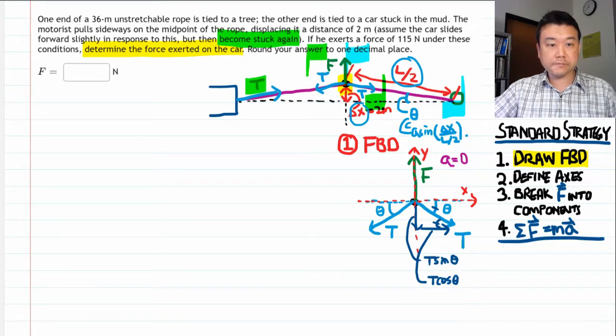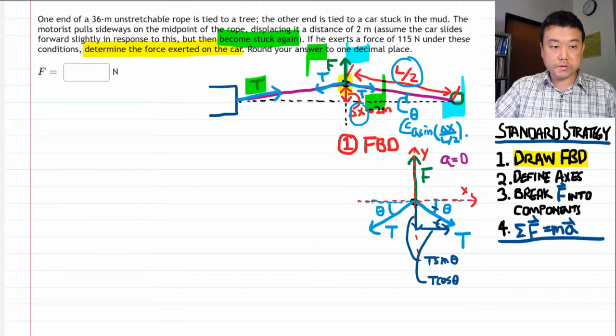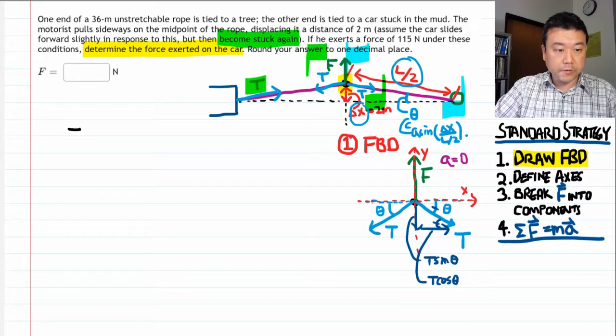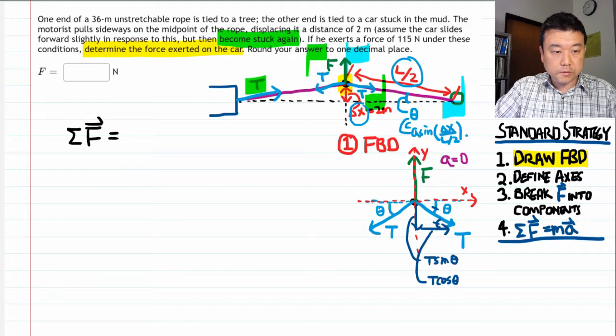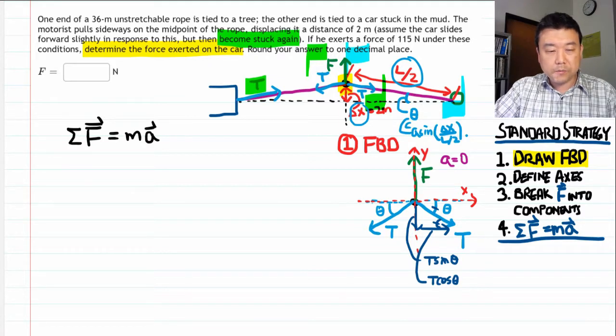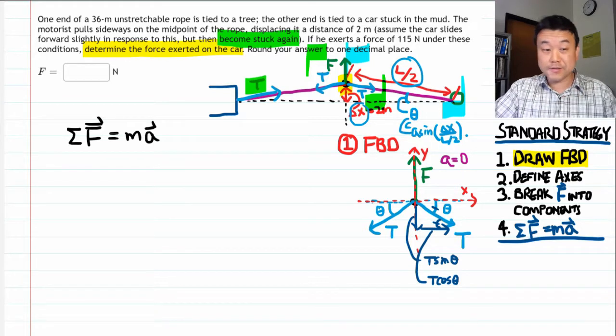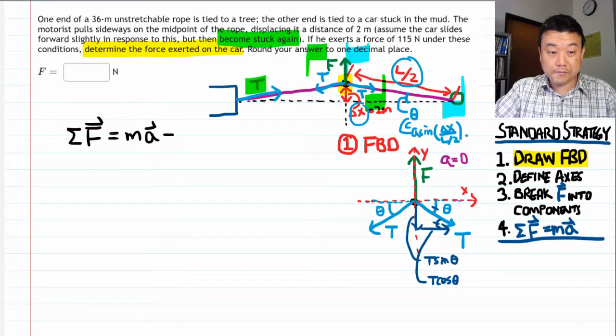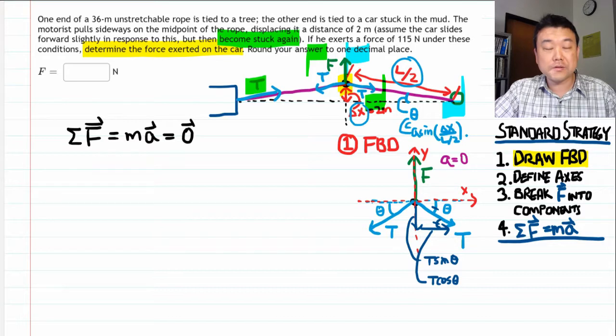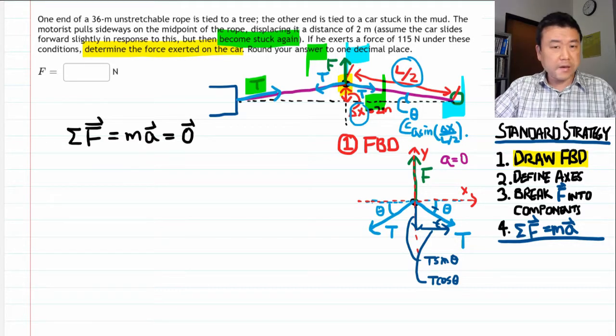All right. Now we are ready. We should write down the Newton's second law equations. That is, net force is equal to mass times acceleration. And you might be wondering what mass. We are drawing a little segment of the rope. But not to worry. The acceleration is zero. So either way, it's going to be zero anyway. So that makes our job easier. And in this case, let me cut out on some unnecessary work.